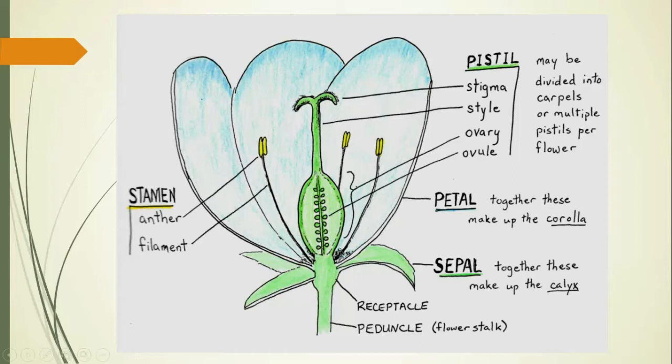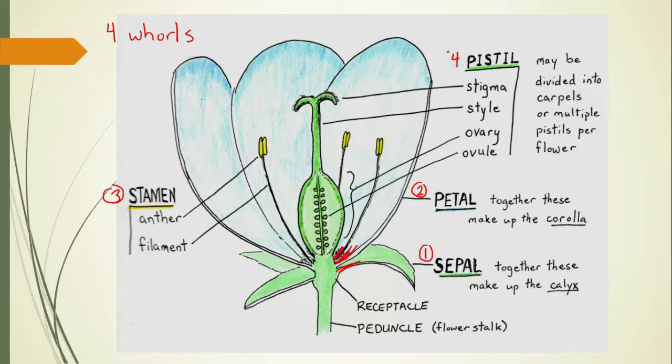The best place to start learning about flowers is to take a good look at a basic flower design — they don't all look the same. Flowers have up to four whorls, four different layers of structure. One at the base, most leaf-like, is the sepals. Then you have the petals. Here we have the sepals coming out first, then the petals. After that you have the male structures, the stamens. And then finally the pistils, which are the female structures. Those are the four whorls.